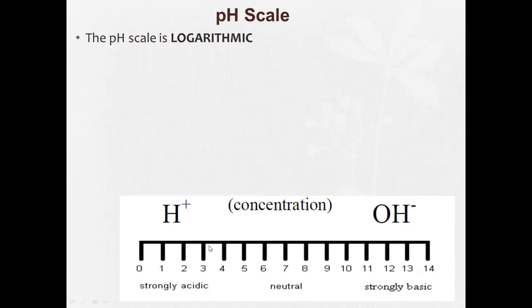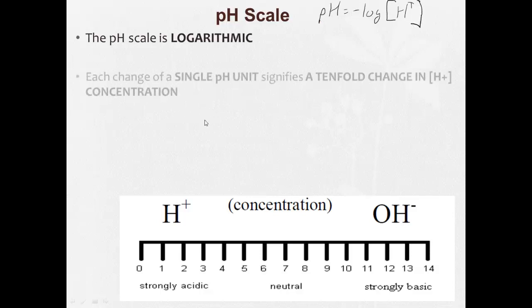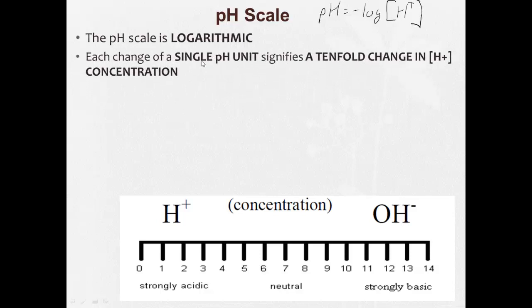The pH scale, like you saw with the formula earlier, pH equals minus log of a concentration of H-plus, is logarithmic. That means each change of a single pH unit signifies a tenfold change in hydronium concentration.